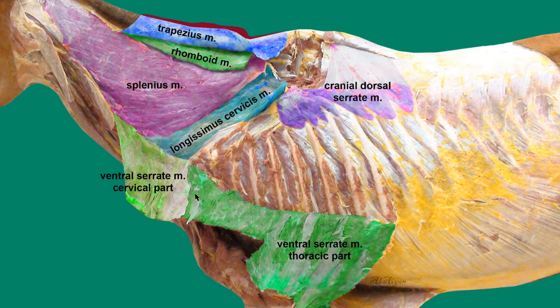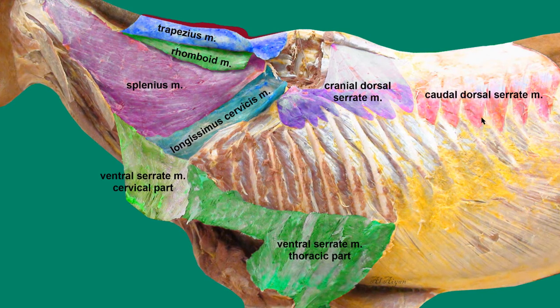This muscle is one of the inspiratory muscles, originating from the ribs and inserting to the nuchal ligament and the spinous processes of the thoracic vertebrae. This is the cranial dorsal serratus muscle, also called the cranial part of the dorsal serratus. The next muscle highlighted in red is the caudal dorsal serratus muscle, which also originates from the ribs.